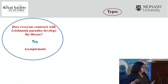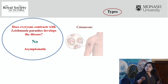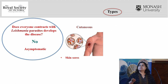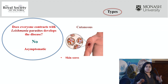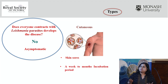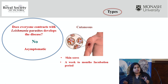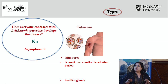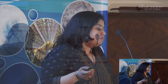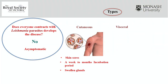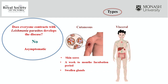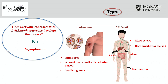What are the major types of Leishmaniasis? There are majorly two I'm going to discuss today. One is cutaneous — as the name suggests, it affects the skin, creating skin sores, with an incubation period from one week to months, with swelling glands as a major symptom. The second is visceral Leishmaniasis, which is very dangerous and more severe, with a high incubation period that can range from months to years, and it can affect the liver, spleen, and bone marrow — it's very deadly.